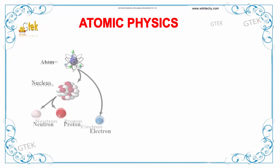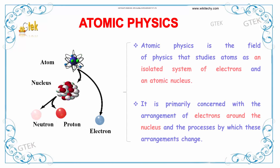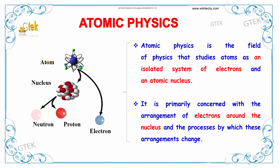What is atomic physics? Atomic physics is a field of physics that studies atoms as an isolated system of electrons and an atomic nucleus. You are able to see the nucleus surrounded by the electrons.